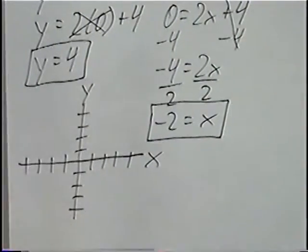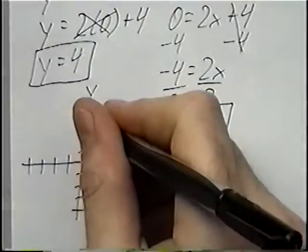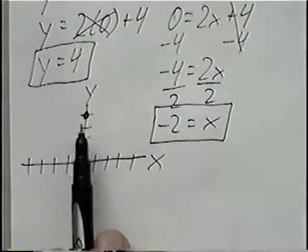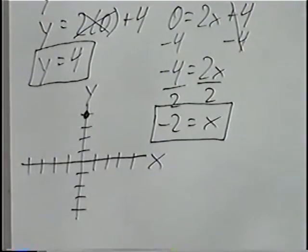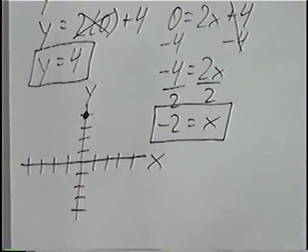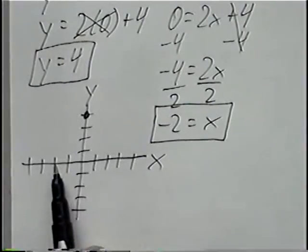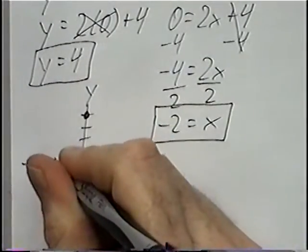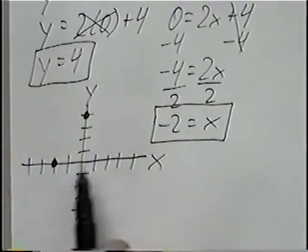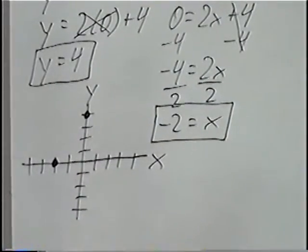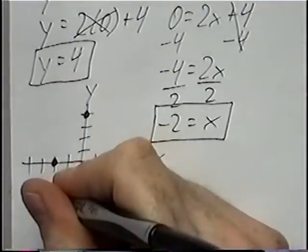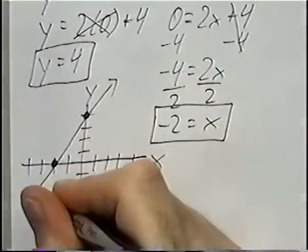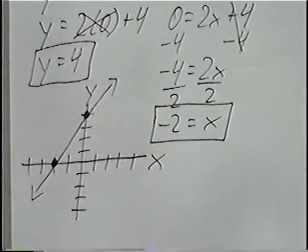Y equals four means we go up to four on the y-axis — that is the y-intercept, where the line crosses the y-axis. If x is negative two, we go to negative two on the x-axis — that is the x-intercept, where the line crosses the x-axis. After graphing both intercepts, draw a line through them, and that is the graph for the equation.